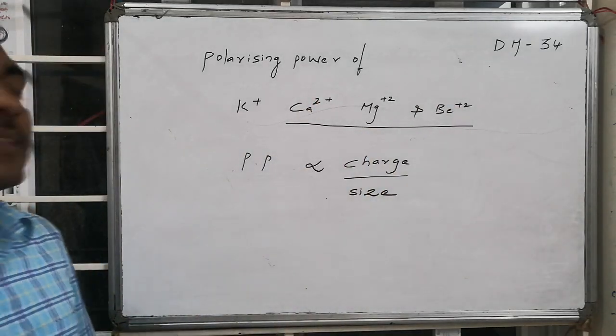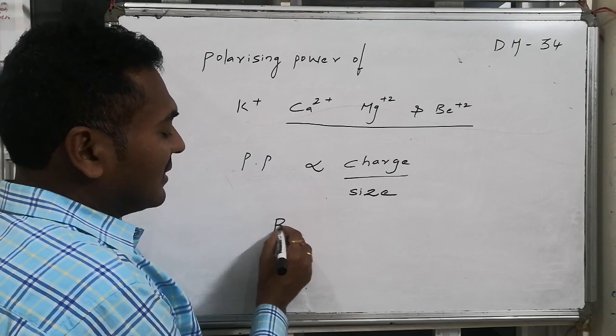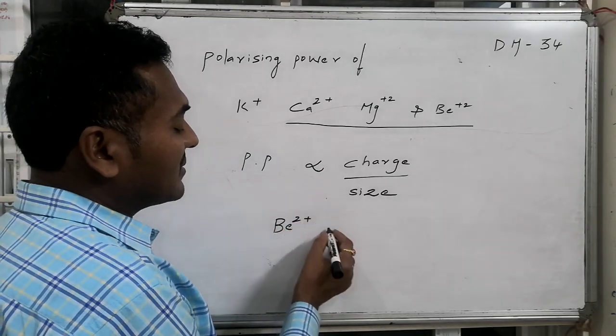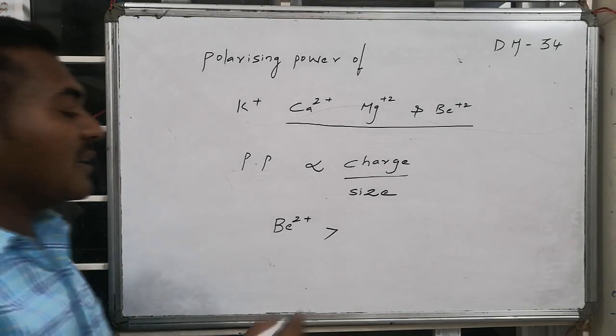Whichever is having lesser the size maintains higher polarization power. Lesser size is for Beryllium, hence highest polarization power is present for the Beryllium.